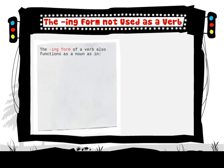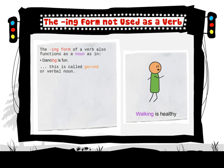The ing form of a verb also functions as a noun, as in dancing is fun. This is called gerund, or verbal noun. For example, walking is healthy. There are many such nouns in English.